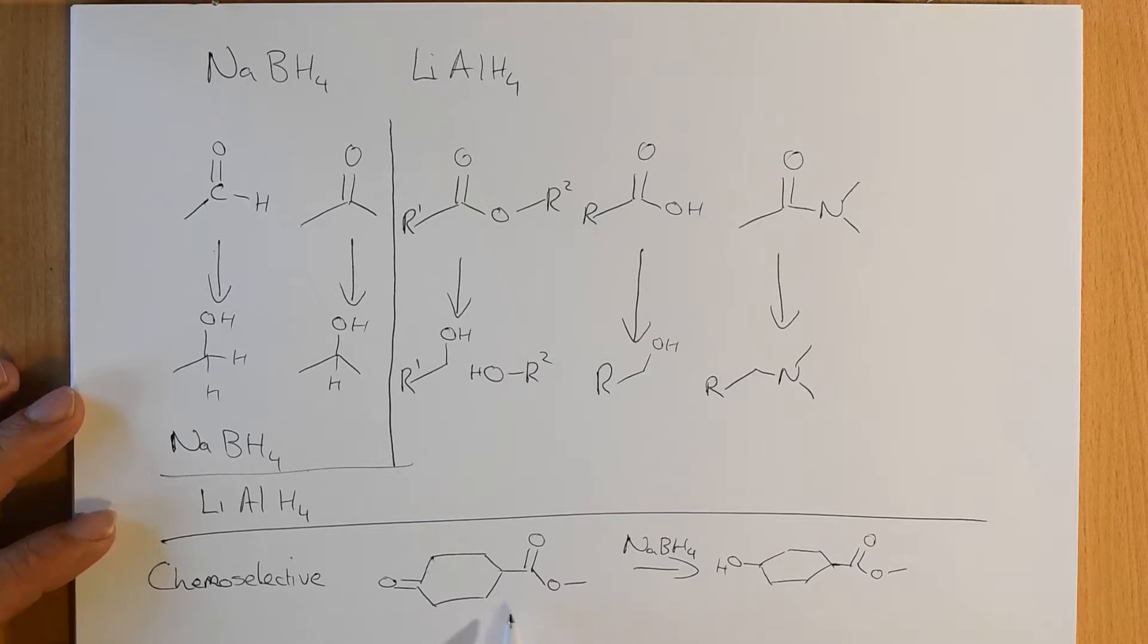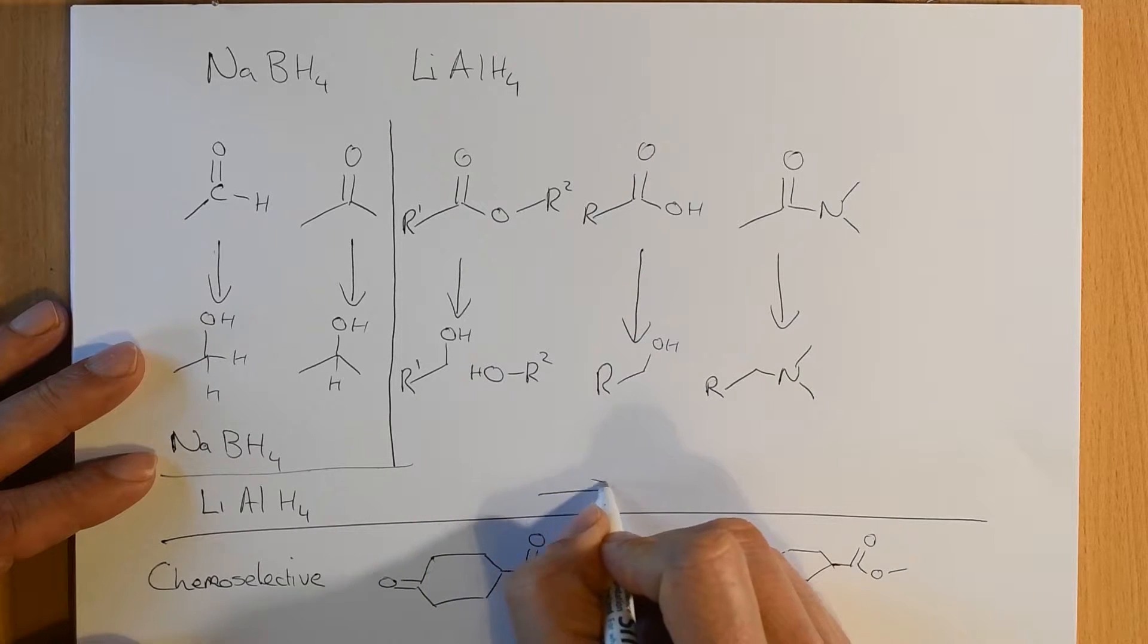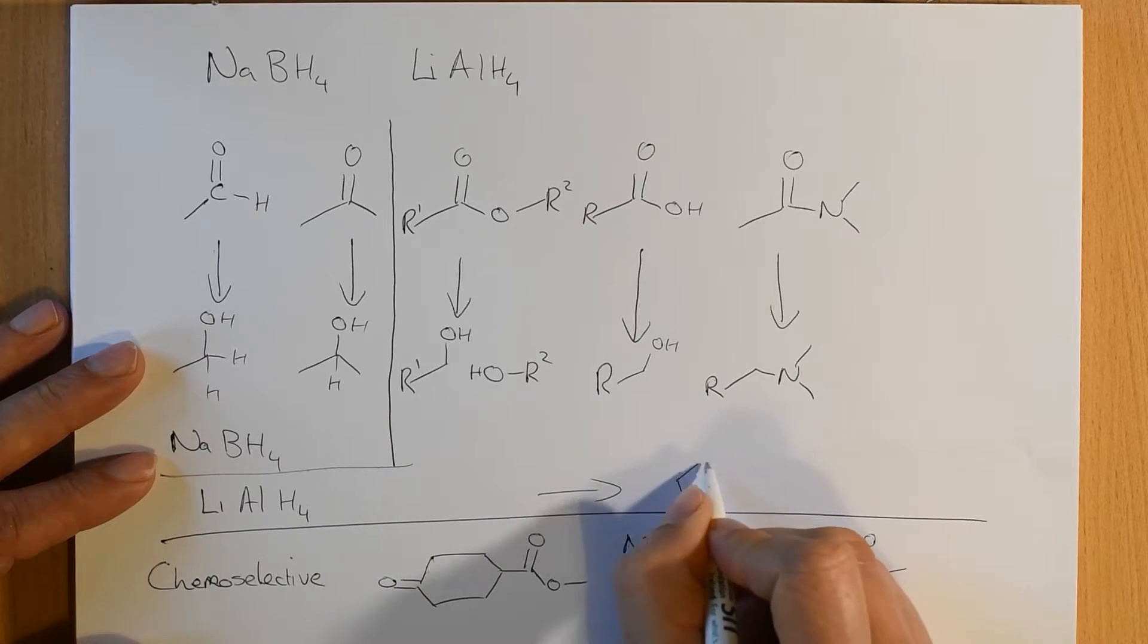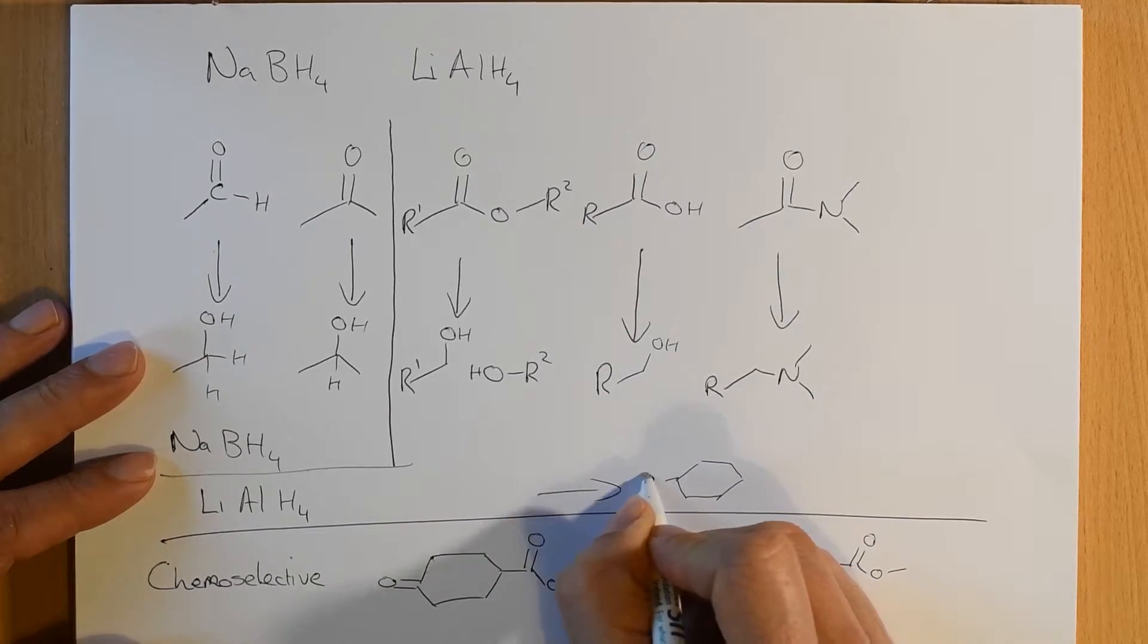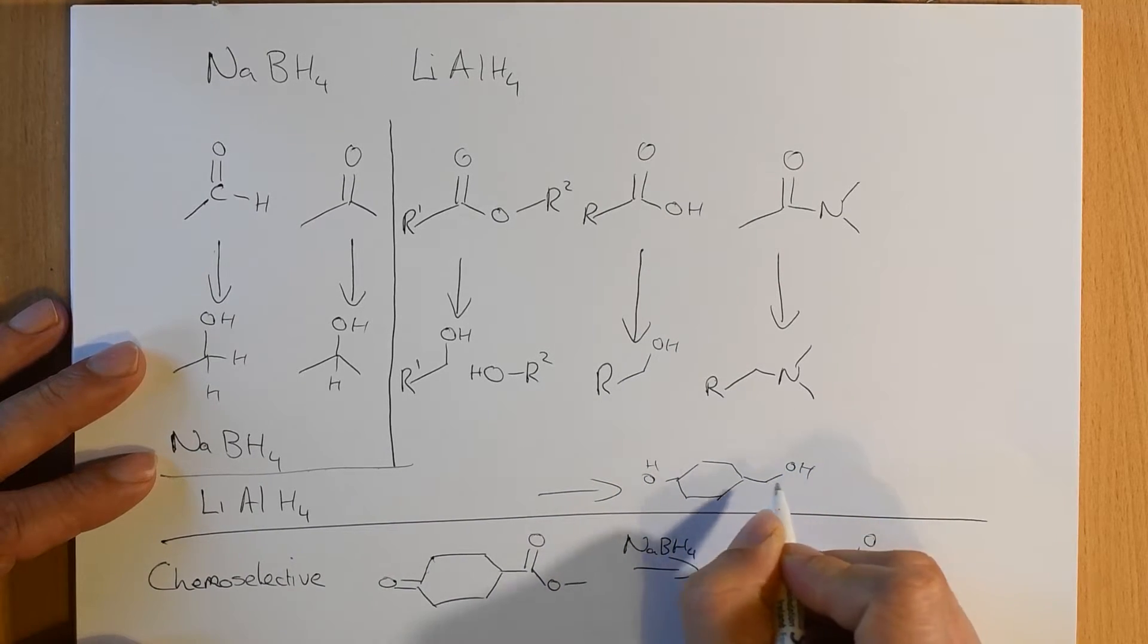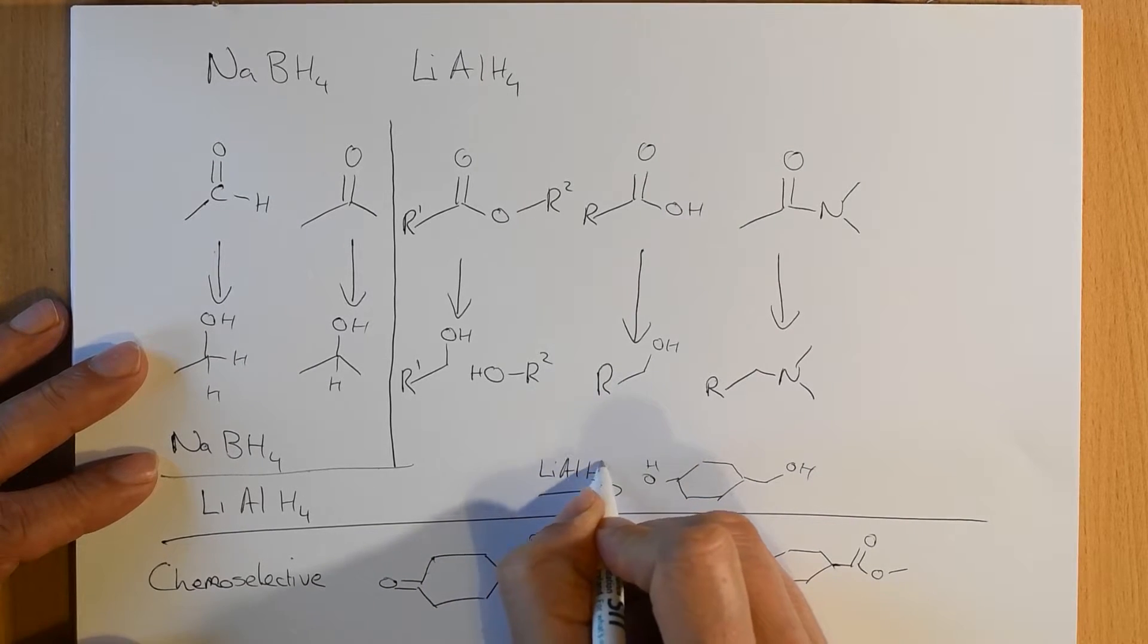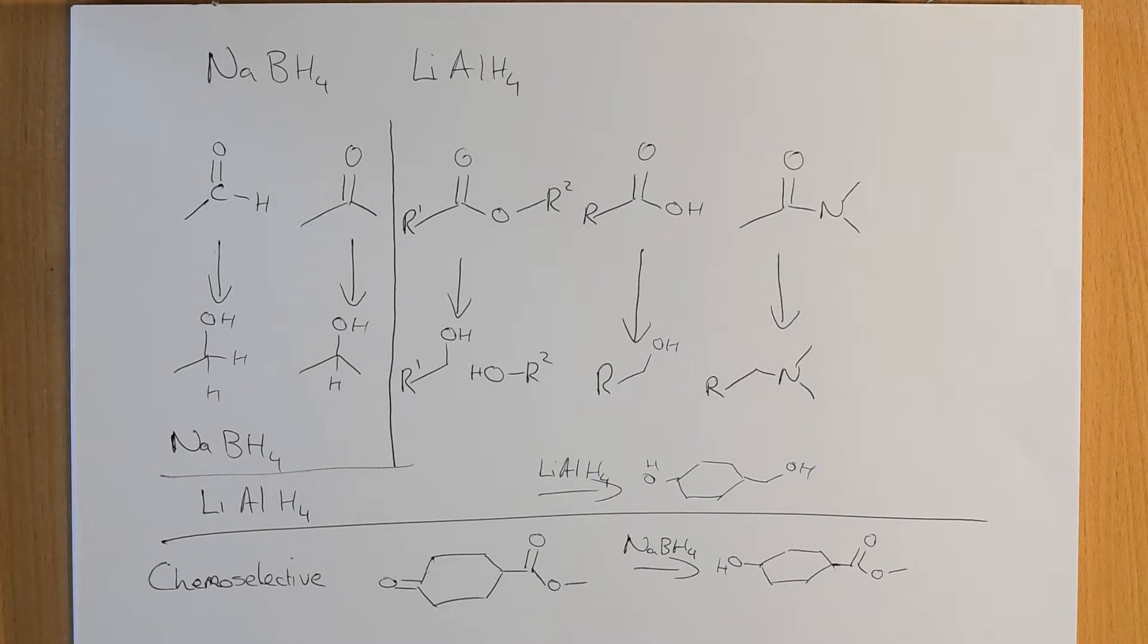On the other hand, if we were to treat that with lithium aluminum hydride, we'd expect both to be reduced. So, if we treat it with lithium aluminum hydride, we expect the alcohol formed here, and we also expect the alcohol formed at the other end. And that's an example of chemoselectivity.